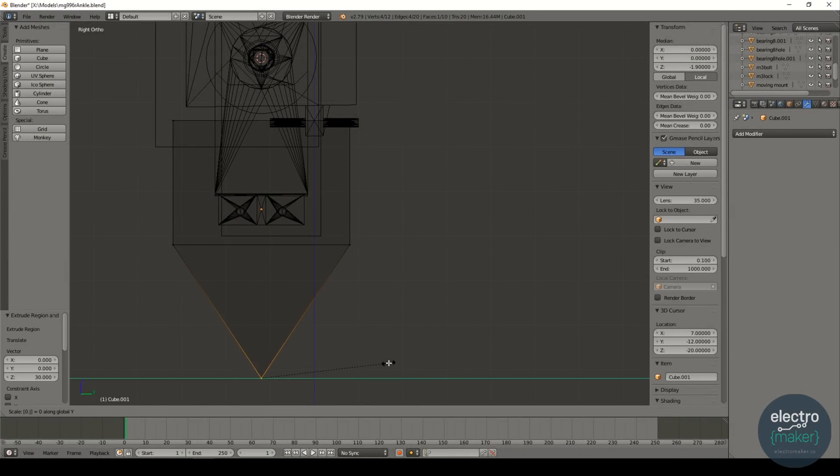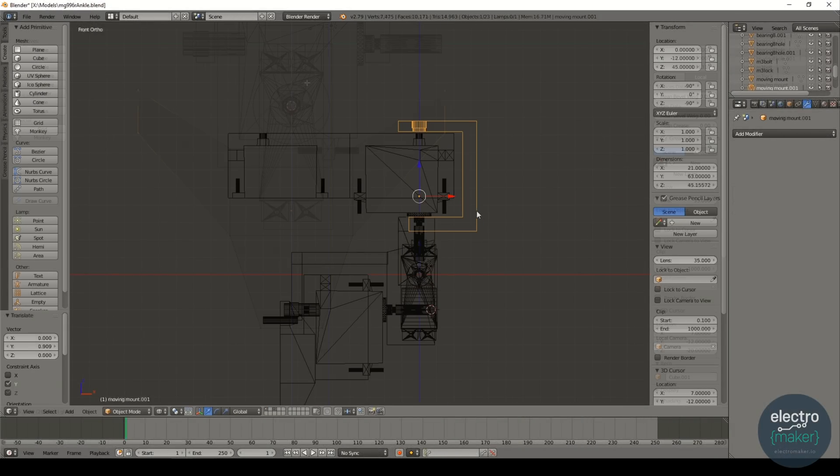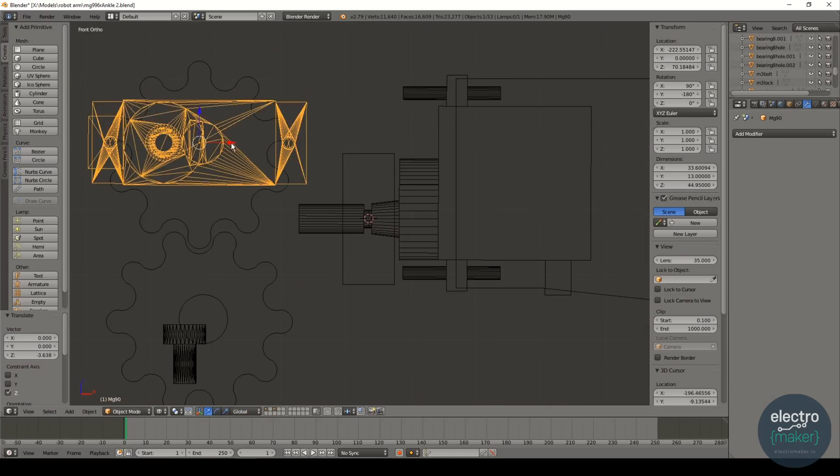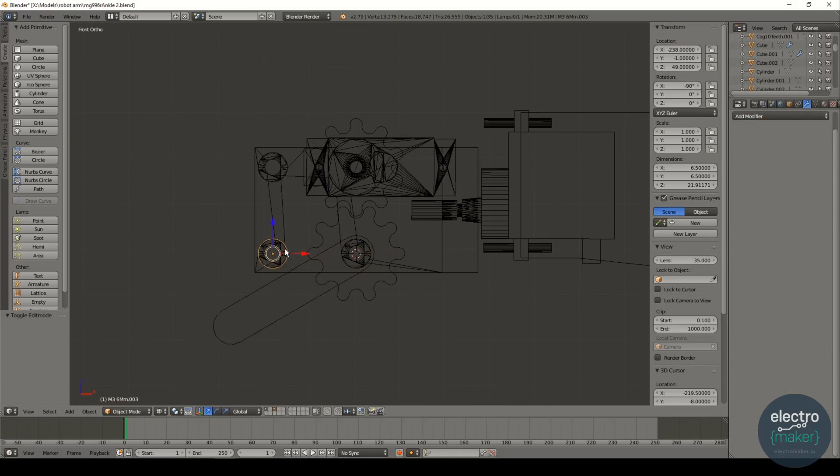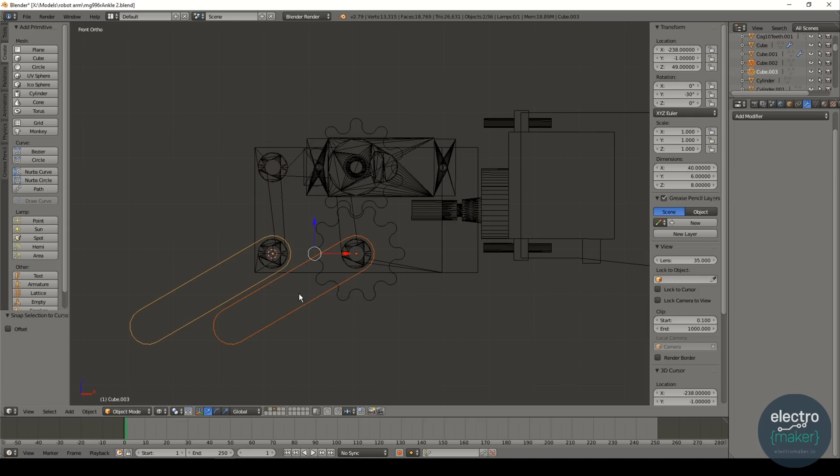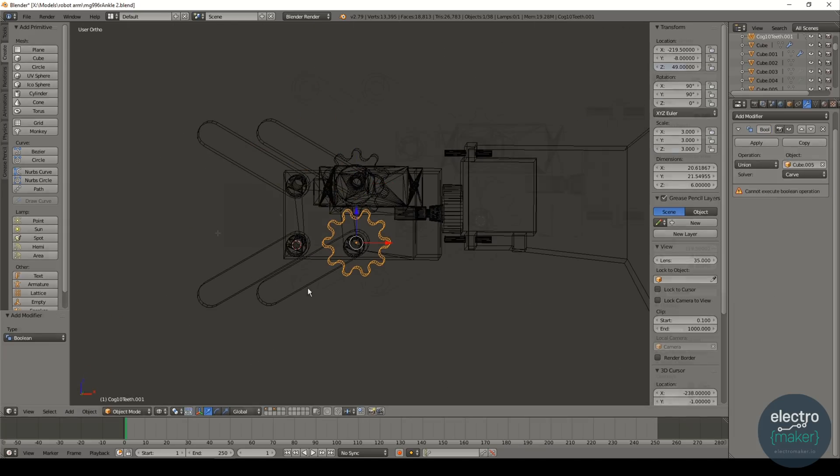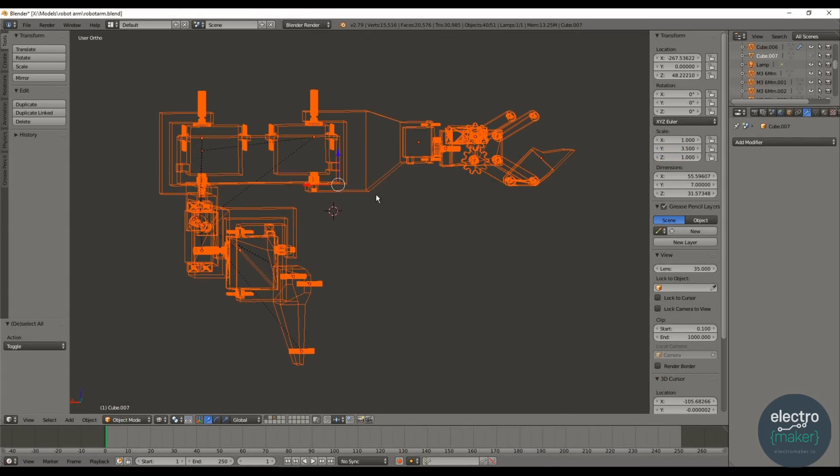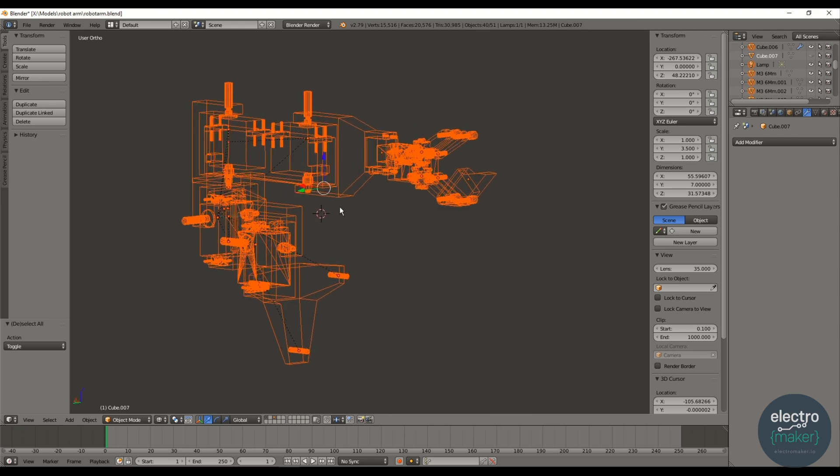I started this project by designing the robot arm using Blender. The shoulder first and worked my way down the kinematic chain to the hand. Having the servos as 3D models from previous projects was quite useful. You can find all the resources on the project page linked below.